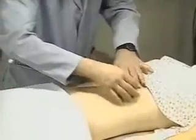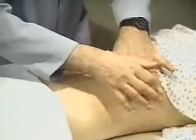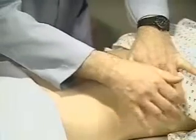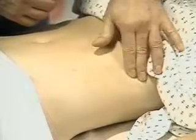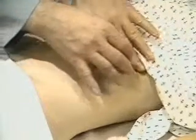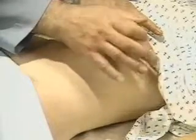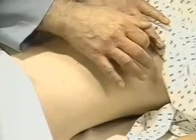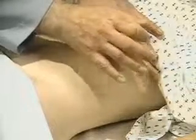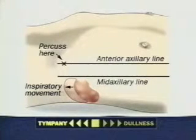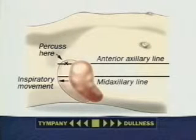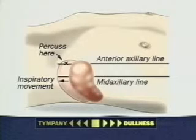To assess the size of the spleen, percuss the left lower anterior chest wall in a lateral direction, noting the extent of tympani. If tympani is prominent laterally, spleen enlargement is unlikely. Next, check for a splenic percussion sign: find the lowest interspace in the left anterior axillary line and percuss there. If tympani is heard, ask the patient to take a deep breath and continue to percuss in the same place. When spleen size is normal, tympani usually persists and the sign is considered negative. When the spleen is enlarged, tympani often changes to dullness — this is a positive sign. This sign may be falsely positive, but it indicates careful palpation.